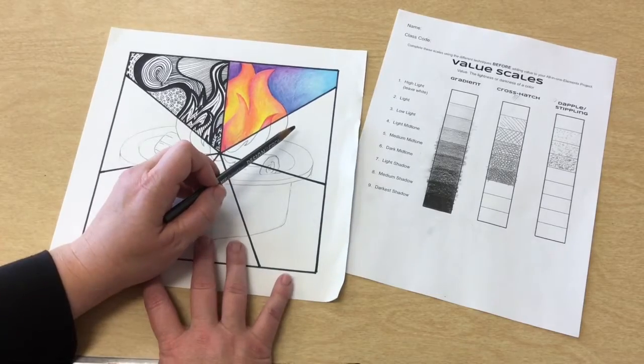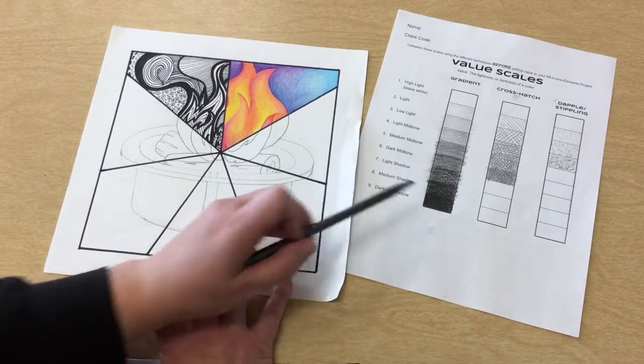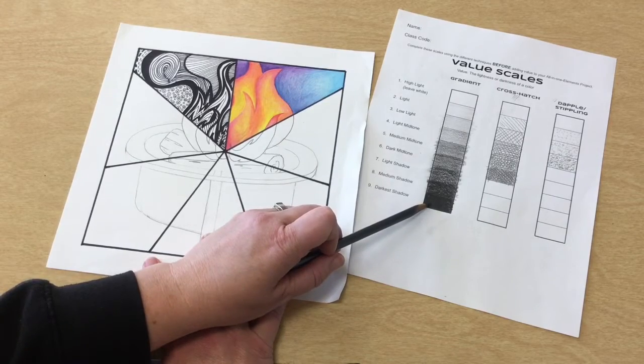The key points here are that you need to have some areas that stay white, and you need to have some areas that are solid black.